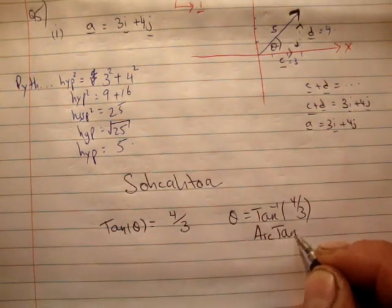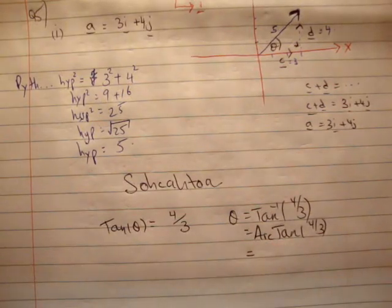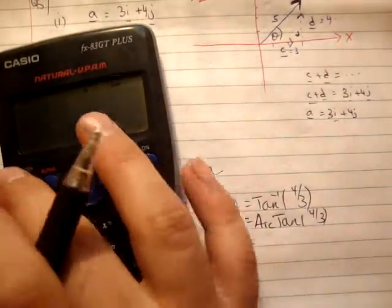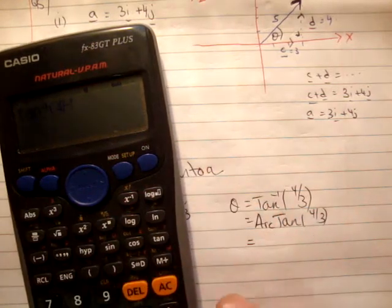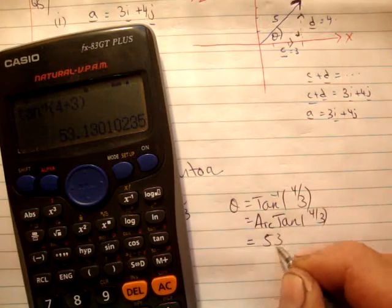Let's find out what it equals. So inverse tan of 4 divided by 3 is equal to 53 degrees, 53 degrees.